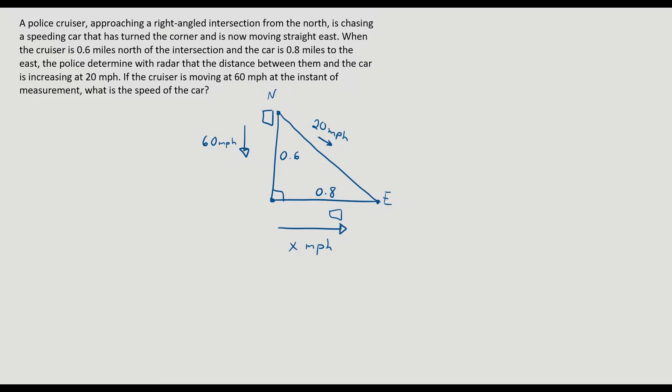When you do these problems, I really like to set it up with three things: the given, what you're trying to find, and a relating equation. This is a great way to organize your information for these type of problems. So before you do any calculus or actual math work, just lay these things out and then we'll get to the calculus. So when I say given, I want to know what is the given rate. Well, we're given that 60 miles per hour is the police cruiser, and the distance between them is increasing at 20 miles per hour.